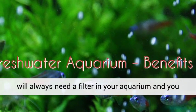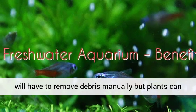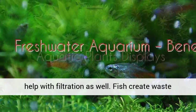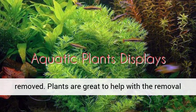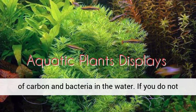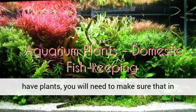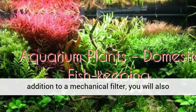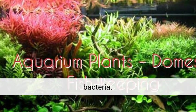Filtration: you will always need a filter in your aquarium and you will have to remove debris manually, but plants can help with filtration as well. Fish create waste products which ends up harming the fish if not removed. Plants are great to help with the removal of carbon and bacteria in the water. If you do not have plants, you will need to make sure that in addition to a mechanical filter, you will also need one to filter for chemicals like carbon and bacteria.